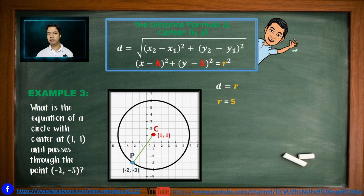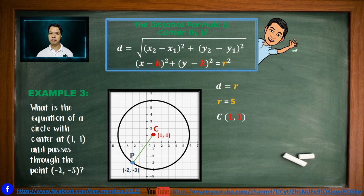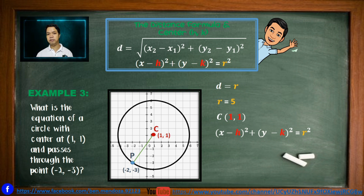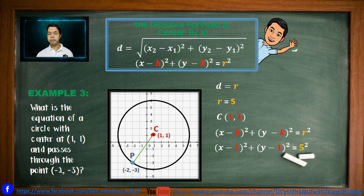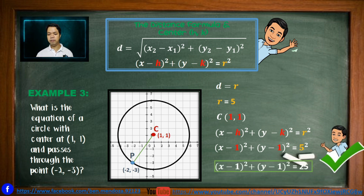Since D is equal to R, the value of R is equal to 5 units, and the center is at (1, 1). Now we can form the standard equation of that circle using the formula: (x minus h)² plus (y minus k)² equals R². Substituting h = 1, k = 1, and R = 5, the resulting equation becomes (x minus 1)² plus (y minus 1)² equals 5², giving us the final answer: (x minus 1)² plus (y minus 1)² equals 25.